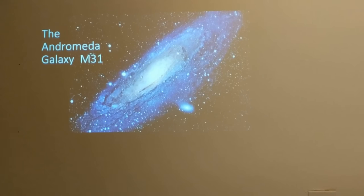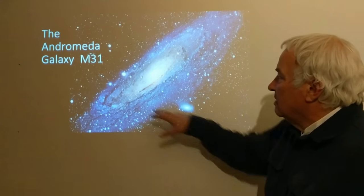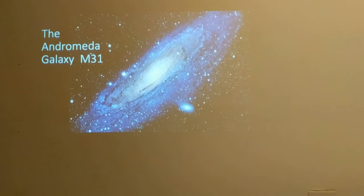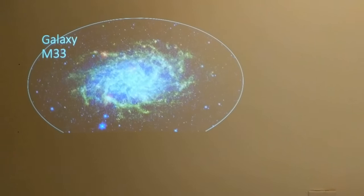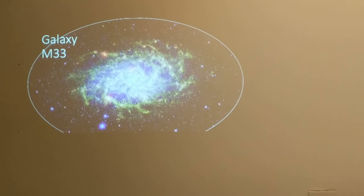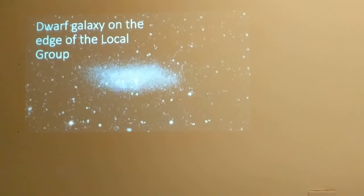The other massive galaxy in the local group is the Andromeda galaxy, also called M31, which has companion galaxies of its own as part of the Andromeda system. The Triangulum galaxy, M33, is the smaller of the three spirals. There are maybe 40 or so galaxies in the local group, and a few small dwarf galaxies probably haven't been discovered yet. Here is one we do know about — near the edge of the local group — a dwarf galaxy with little structure and far fewer stars than the large spirals.